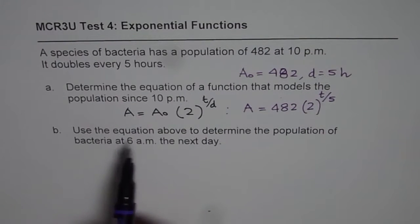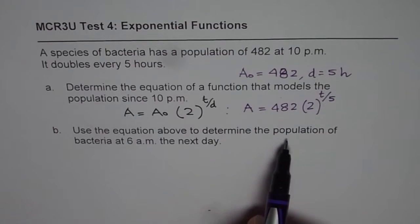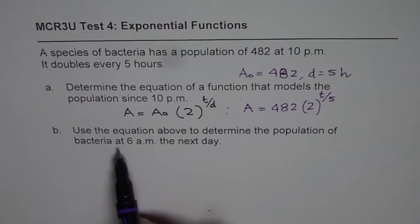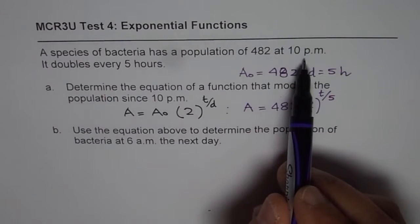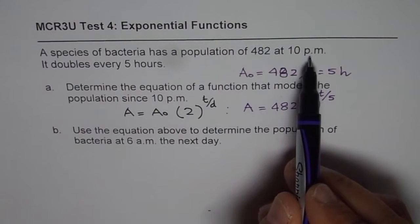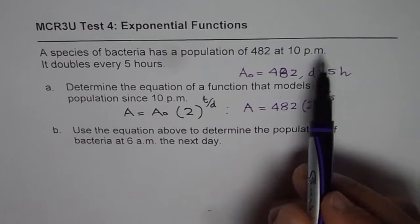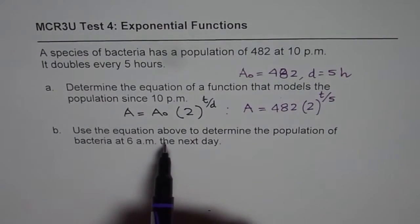Now, part 2 is, use the equation above to determine the population of the bacteria at 6am the next day. Now it is 10pm, so it is night time, after 2 hours it will be 12, the next day starts, and then 6am means 8 hours.